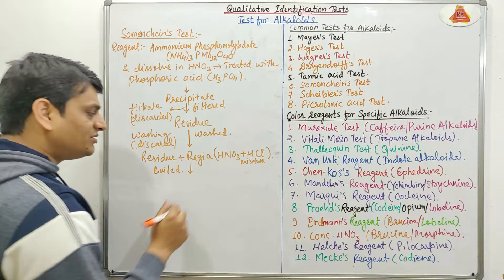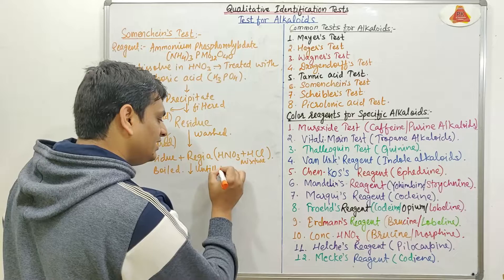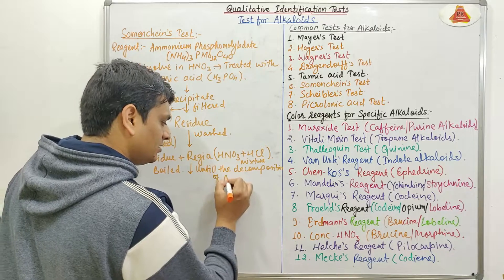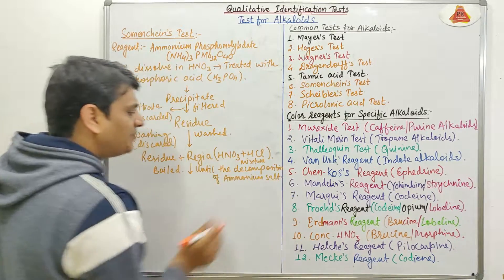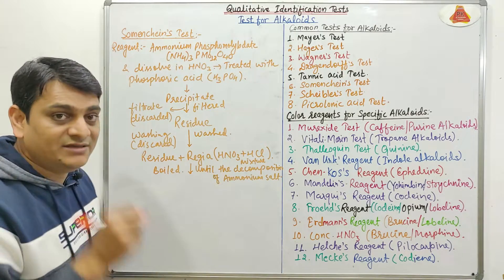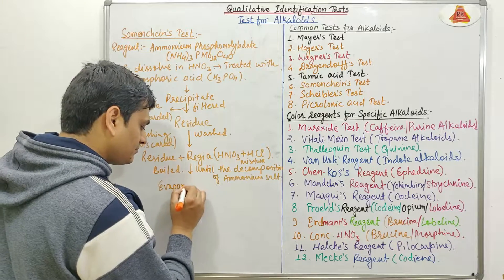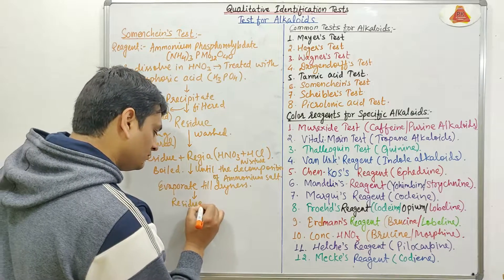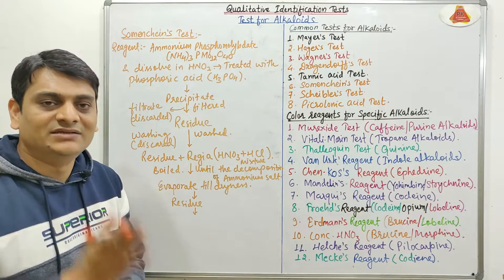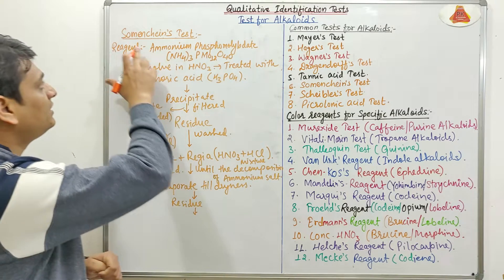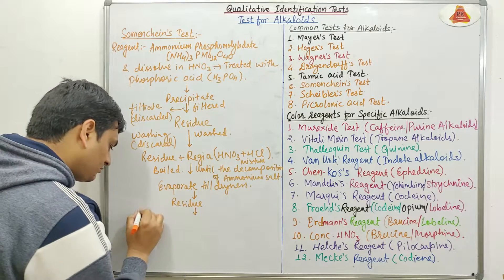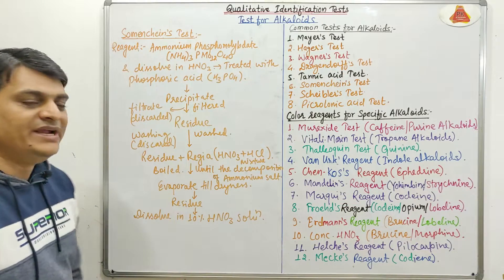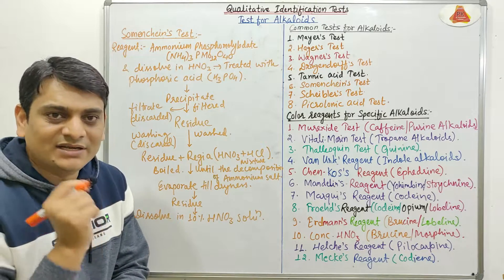After boiling, the Ammonium Salt will be decomposed until complete decomposition. After that, we will evaporate the liquid present until dry. We will then get the residue, and this residue will be finally dissolved in 10% HNO3. This is the complete process for preparation of the reagent, which is slightly complicated.